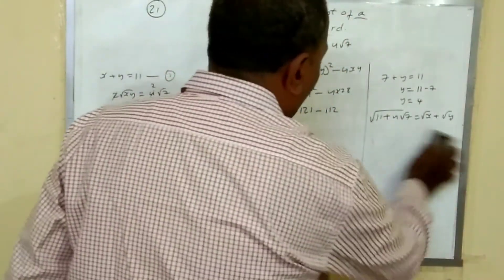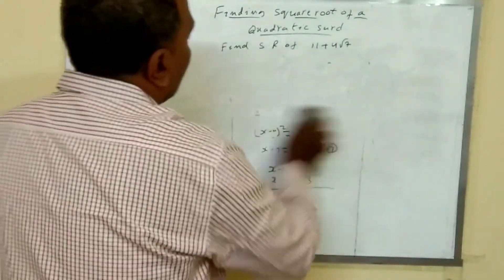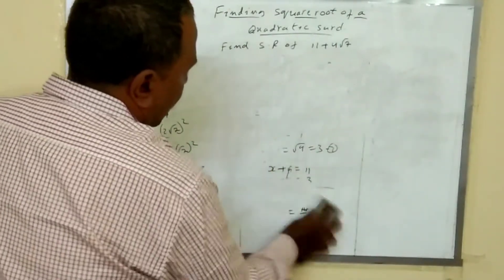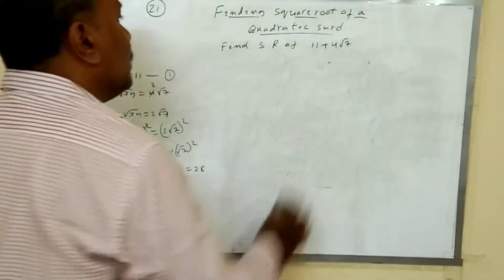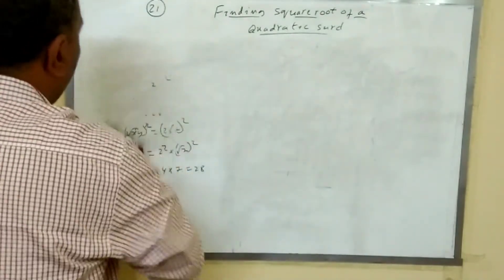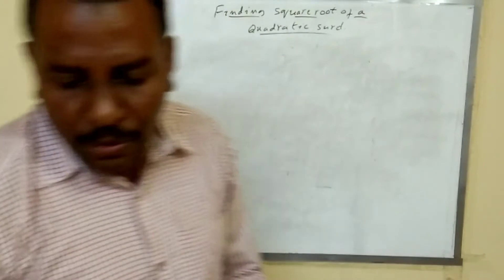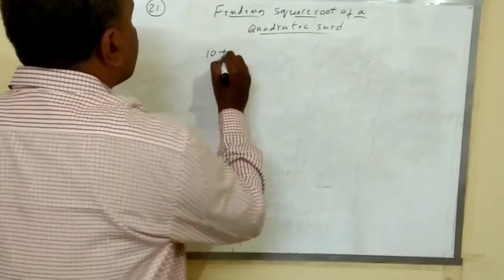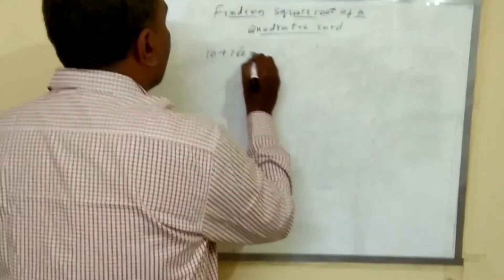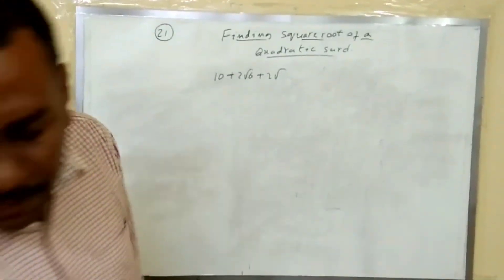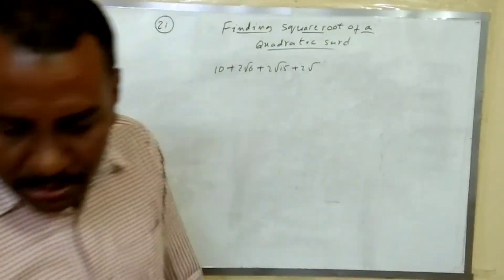So this is how we find the square root of a quadratic surd. Now we will take one more example: find the square root of 10 plus 2 root 6 plus 2 root 15 plus 2 root 10.